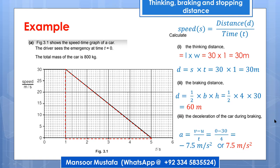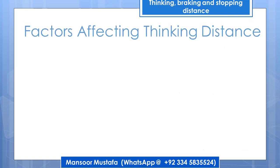Now let's discuss which factors can change thinking distance and braking distance — whether these are fixed for every situation and every person, or whether they can vary. Before discussing those factors, note that the thinking time for a normal human is from 0.3 to 0.5 seconds. This is the time a normal person takes to react, during which some distance is traveled — the thinking distance.